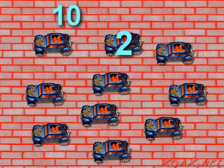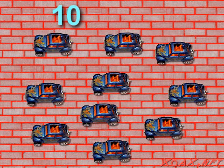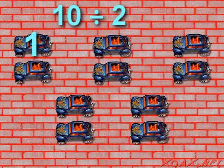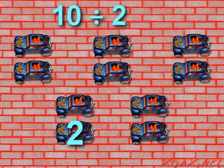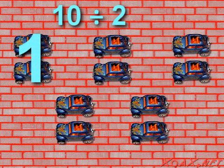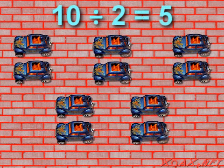For our next example, we have ten cars: one, two, three, four, five, six, seven, eight, nine, ten. Now we want to divide ten by two. So we group the cars into groups of two: one, two; one, two; one, two; one, two; one, two. Then we count the groups of two: one, two, three, four, five. So ten divided by two equals five.